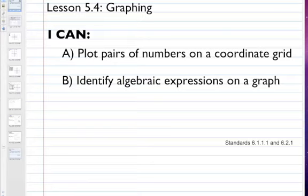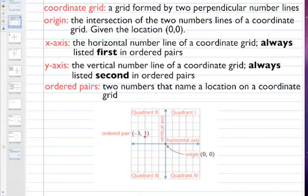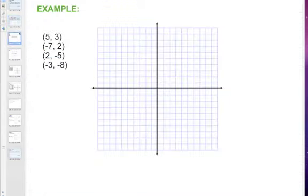So two objectives: to plot pairs of numbers on a coordinate grid and the second is to identify algebraic expressions on a graph. We taped in this vocabulary in class today so that you wouldn't have to copy all of it down.